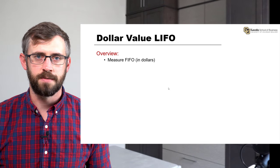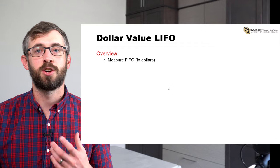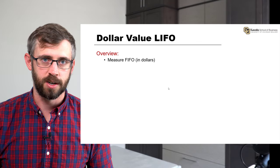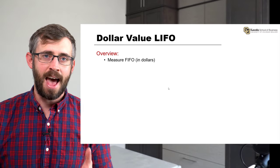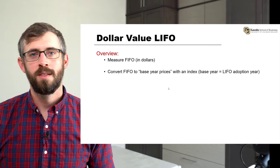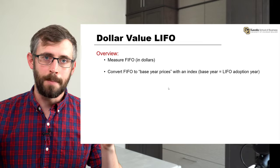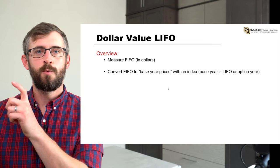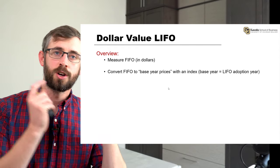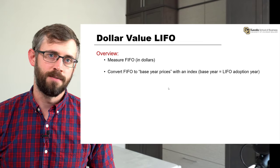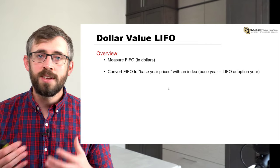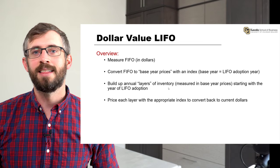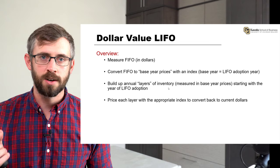The way we're going to approach Dollar Value LIFO is we're going to first measure our inventory using current costs. A firm knows the current quantities of their goods and the current prices, so they calculate the current value of their inventory at current prices — this is effectively FIFO inventory. Then we take this FIFO inventory and convert it back to what we call a base year price, asking what those prices were back when we started Dollar Value LIFO. Once we have the inventory value using base year prices, we build back our LIFO layers starting with that first year of adoption, and then apply the prices from each individual year to those individual layers.